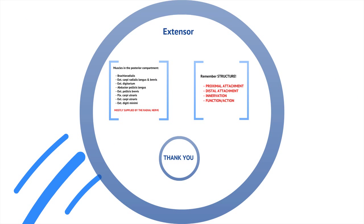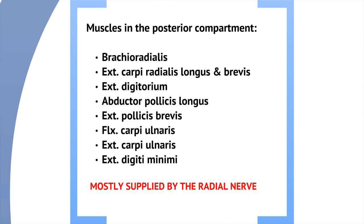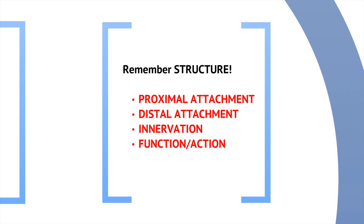Now we're going to look at the muscles of the extensor compartment of the forearm. I'd like you to concentrate on the brachioradialis, extensor carpi radialis longus and brevis, extensor digitorum, abductor pollicis longus, extensor pollicis brevis, flexor and extensor carpi ulnaris, and the extensor digiti minimi. Most of the muscles in the flexor compartment are supplied by the median nerve, and similarly, most of the muscles in the extensor compartment are supplied by the radial nerve. When looking through these muscles, remember the structure of identifying the proximal and distal attachment, the innervation, and the function or action of the muscles.